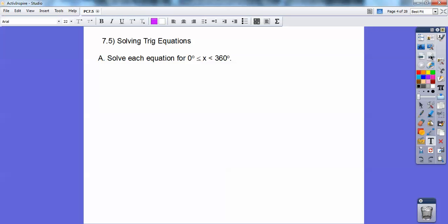Solve each equation for zero degrees in between zero degrees and 360, so they want angles in degrees right here. All right, so right here, sine of x, cosine of x, minus one-half cosine of x. Here I'm going to factor out the cosine of x, and see what I did? I factored out the cosine of x,